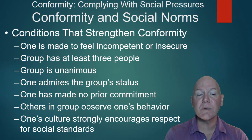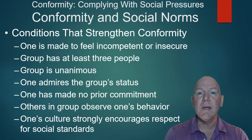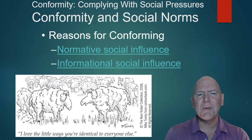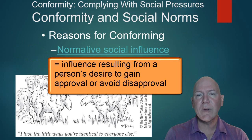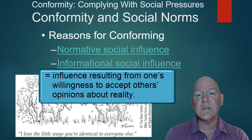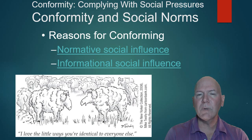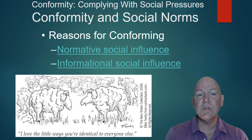Collectivist cultures, which value group harmony more than Western individualistic societies, are more prone to conformity. There are two main reasons we conform: normative social influence — we don't want to stand out and want to fit in — and informational social influence — when the decision is harder and you're not certain of the answer, you go along with the group to get information from them.